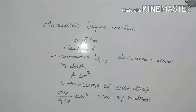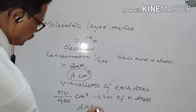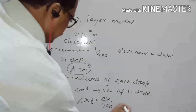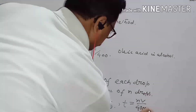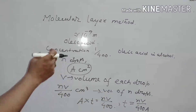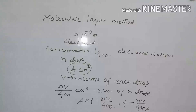The solution is spread as a layer of area A cm². If T is the thickness of the layer, then A × T = NV/400, so T = NV / (400A). If we assume that the oleic acid layer has been stretched to a thickness of one molecule, then the value of T gives the diameter of one molecule of oleic acid.